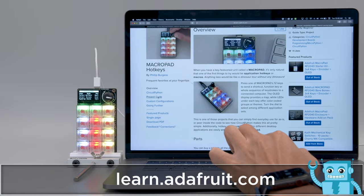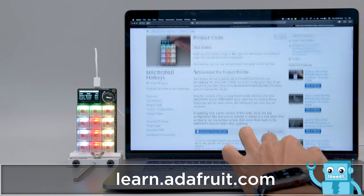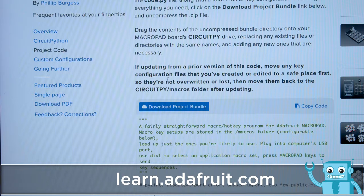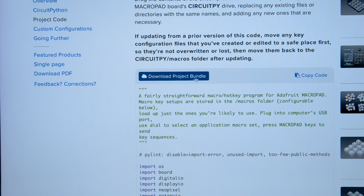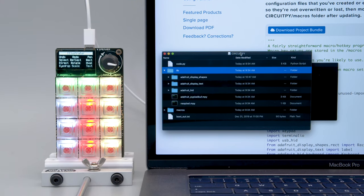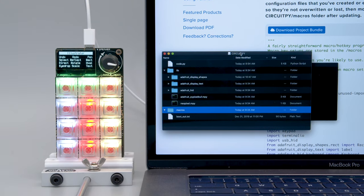Check out the Hotkeys Learn Guide to get your MacroPad set up with your favorite keyboard shortcuts. Click on Download Project Bundle to get the code and all of the libraries and dependencies. To upload, simply drag and drop the code file and libraries onto the board's USB drive.